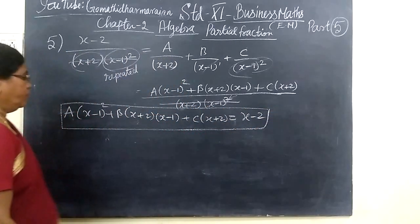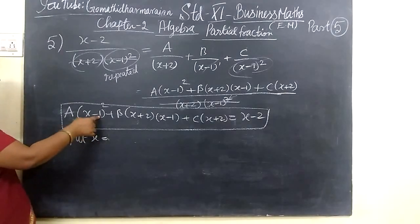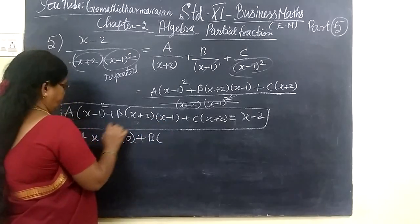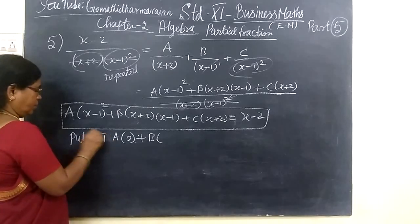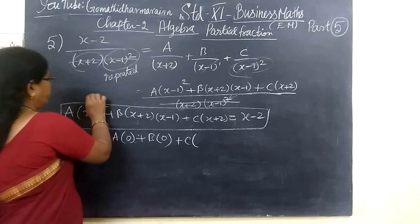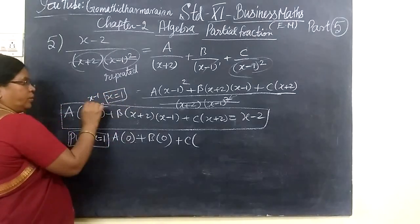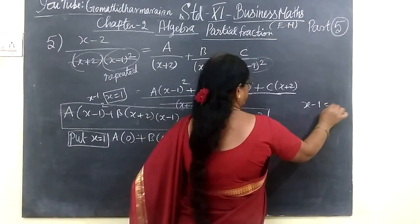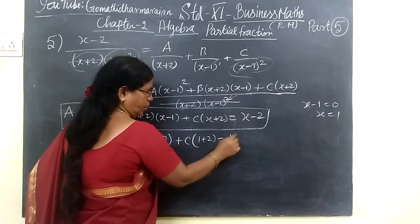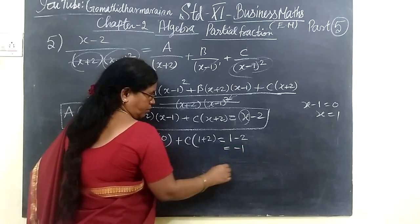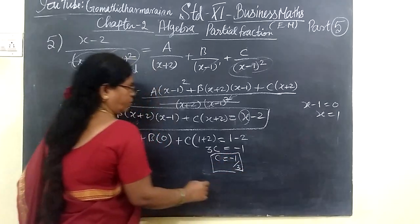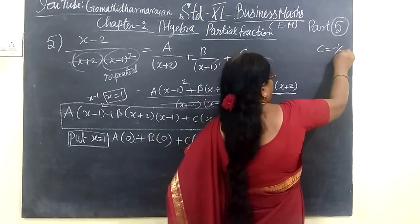Now you have to substitute the value. Put X equal to 1. Since X minus 1 equals 0 means X equals 1. For X minus 1 in the line you are substituting X equal to 1. So 1 plus 2 equals 3 — you substitute X equals 1 — that means 3C. So it implies C equal to minus 1 by 3. We have found the value of C equal to minus 1 by 3.